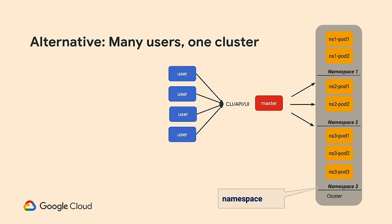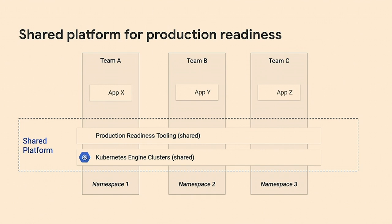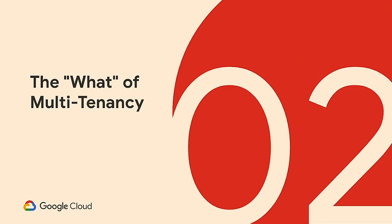An alternative to a separate cluster per app is a shared, multi-tenant cluster. The general approach is to have a large cluster with a large set of nodes, split by namespace, and assign an application to a namespace. Multiple users owning different applications can run in the same cluster. One pattern we've seen is different teams with different applications running in different namespaces on a shared Kubernetes cluster, which also gives you the ability to build platforms on top that provide consistency across all apps running on those shared clusters.